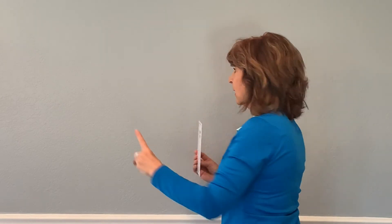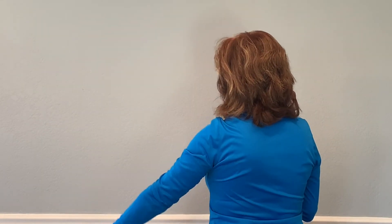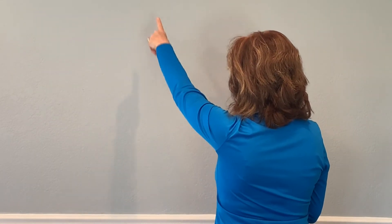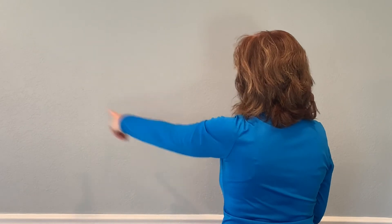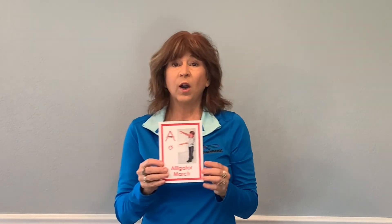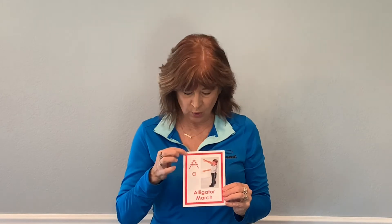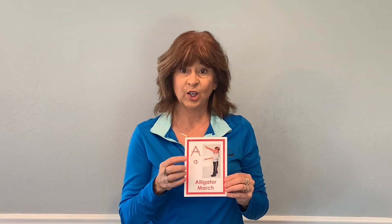This is how we skywrite the uppercase letter A: start at the top, diagonal, diagonal, and across. Or if you have a set of cards, you can have a child trace it with their finger right on the card.